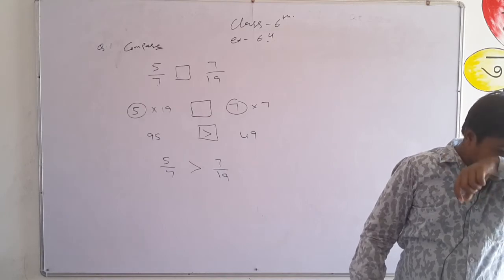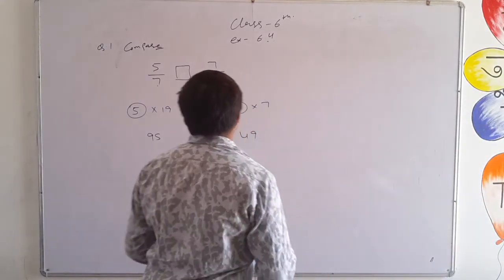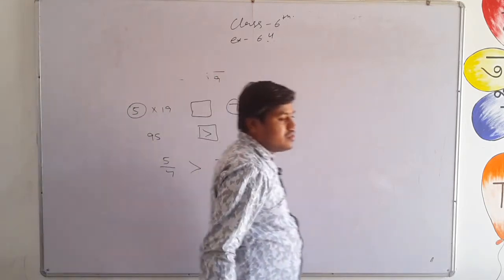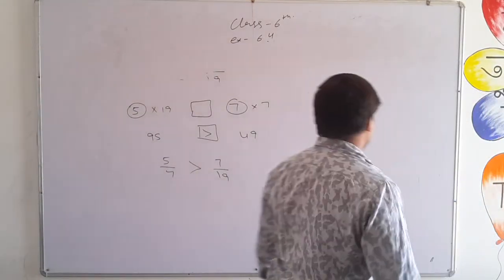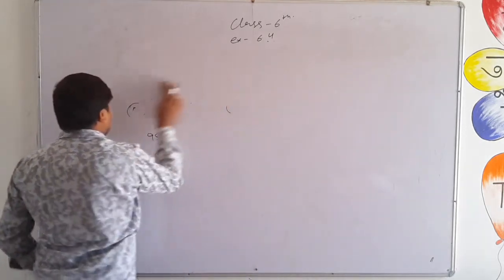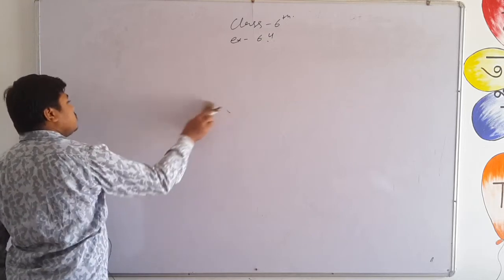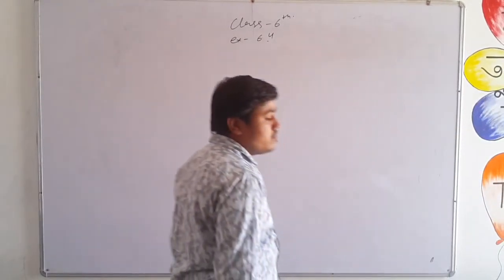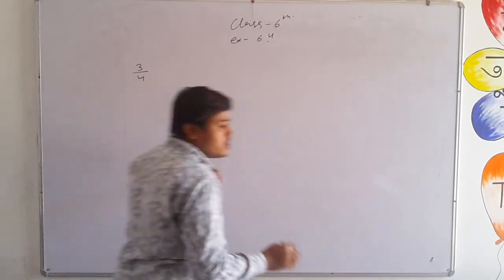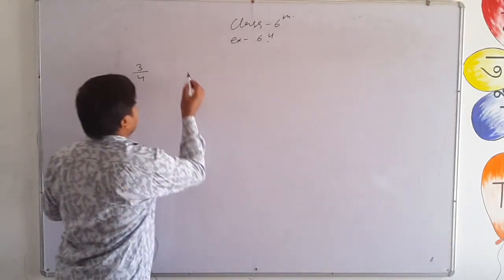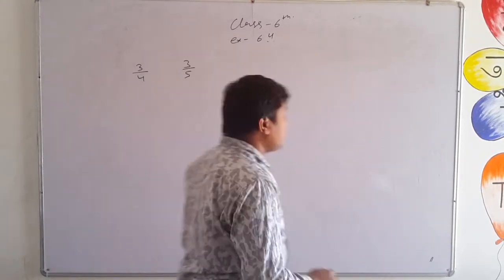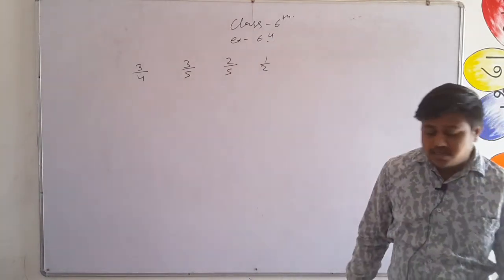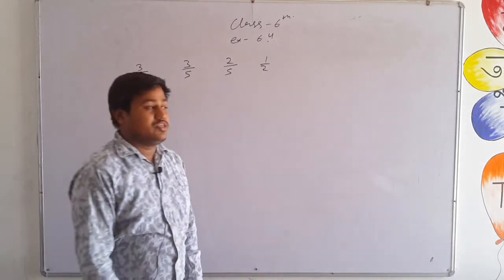After comparison, we come to ascending and descending order. To arrange fractions in ascending or descending order, first make all denominators the same by taking the LCM of the denominators. Ascending order means smallest to largest — the smallest fraction comes first, then bigger ones, and the largest comes last. Question 3 part A has fractions: 3 upon 4, 3 upon 5, 2 upon 5, and 1 upon 2.